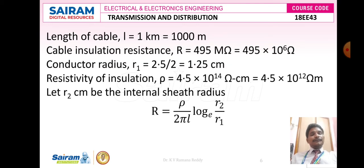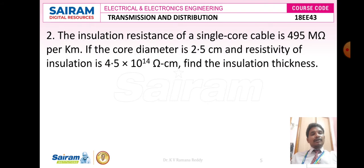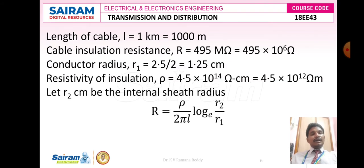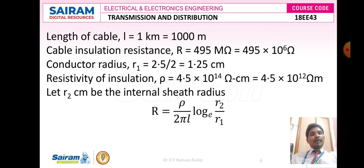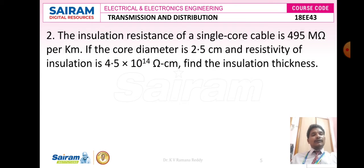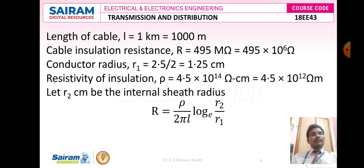From the given data: length l = 1 kilometer = 1000 meters. Cable insulation resistance R = 495 mega ohms = 495 × 10^6 ohms. Core diameter is 2.5 centimeter, so radius r1 = 2.5/2 = 1.25 centimeter. Resistivity ρ = 4.5 × 10^14 ohm-centimeter = 4.5 × 10^12 ohm-meter after conversion.